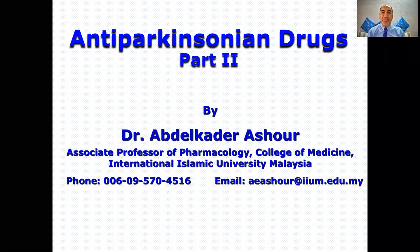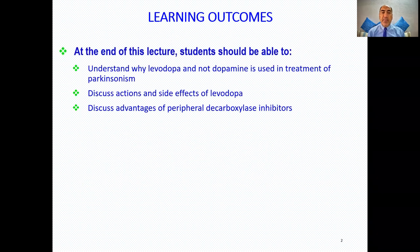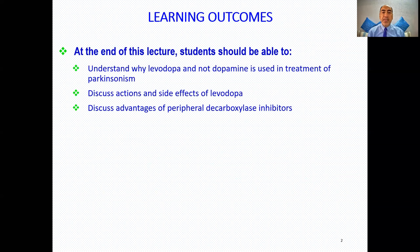Hello everybody, this is again Dr. Ashur. Today we are going to continue our series with anti-Parkinsonian drugs. This is part two, where we are going to talk about why levodopa and not dopamine is used in treatment of Parkinsonism, discuss the actions and side effects of levodopa, and then discuss the advantages of peripheral decarboxylase inhibitors, which are adjuvant to the use of levodopa.